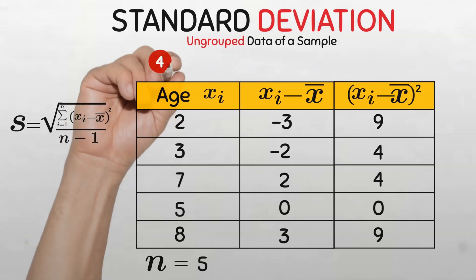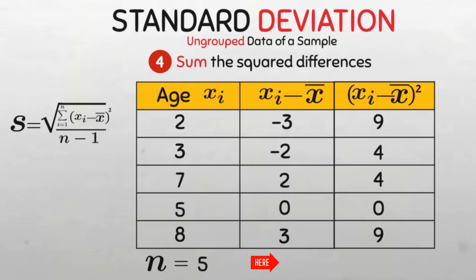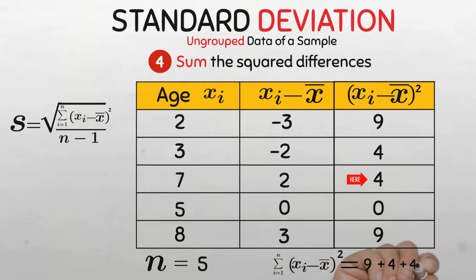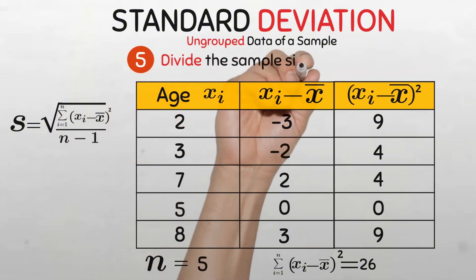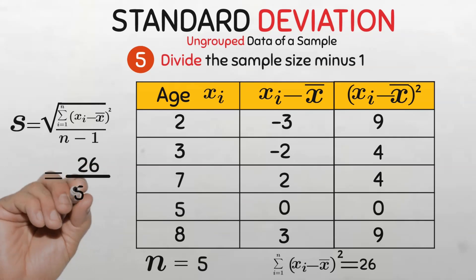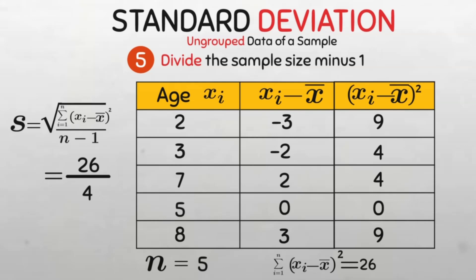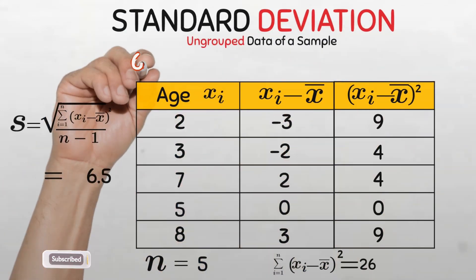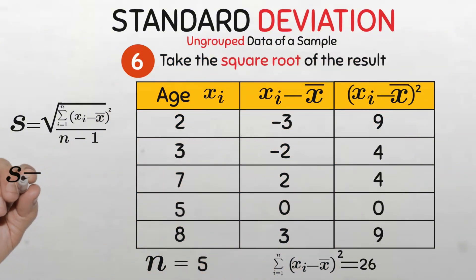Now we go to step four, where we find the sum of all the squared deviations. Using the summation notation from the formula: 9 plus 4 plus 4 plus 0 plus 9 gives us a total of 26. Then in step five, we divide this sum by the sample size minus one. Our sample size is 5, so 5 minus 1 is 4, giving us 26 divided by 4, which equals 6.5. Finally, in step six, we find the square root of 6.5, which gives a standard deviation of approximately 2.6 visits.